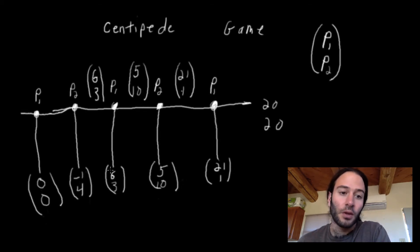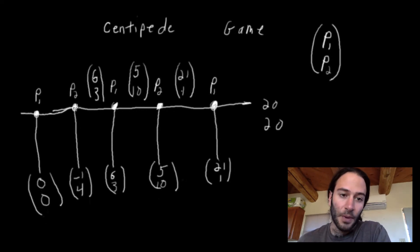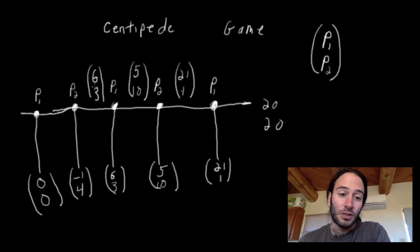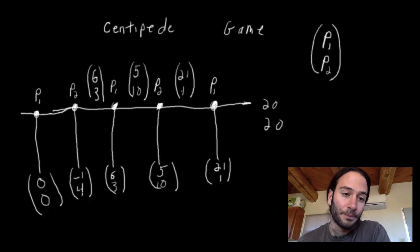Now player two has another decision. If it chooses to keep going, it knows that player one will choose to stop and it would only get a payoff of 3. If it chooses to stop, it'll get a payoff of 4. So player two will choose to stop because 4 is better than 3.